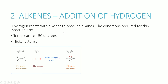The second addition reaction is with hydrogen. Hydrogen reacts with alkenes to produce alkanes. Breaking apart the carbon-carbon double bond of ethene and adding a hydrogen to each carbon simply gives ethane. The conditions required are a temperature of around 150°C and a nickel catalyst. These conditions are important and you need to know them for each reaction.